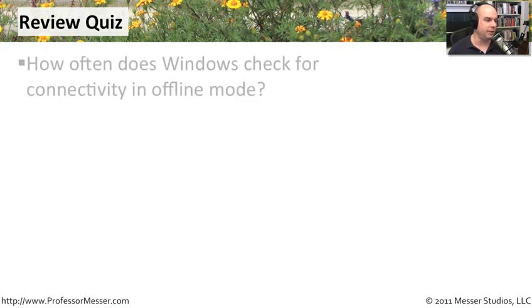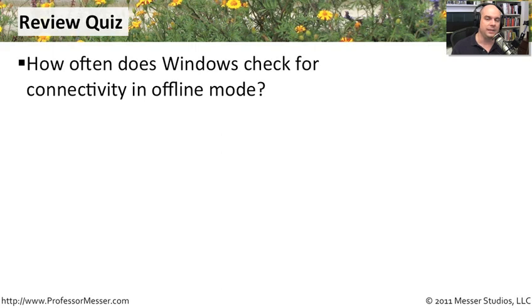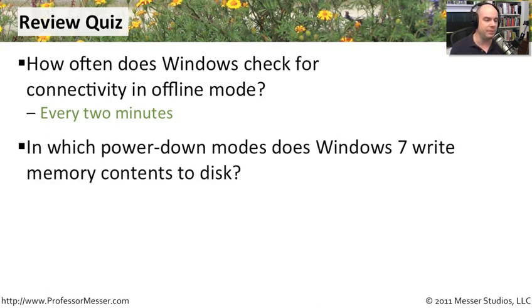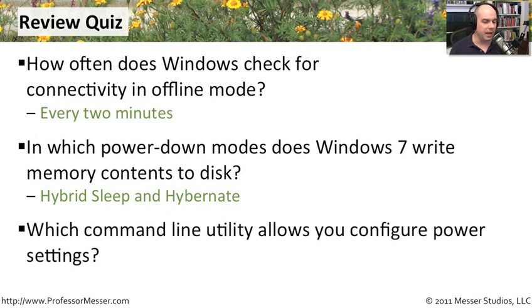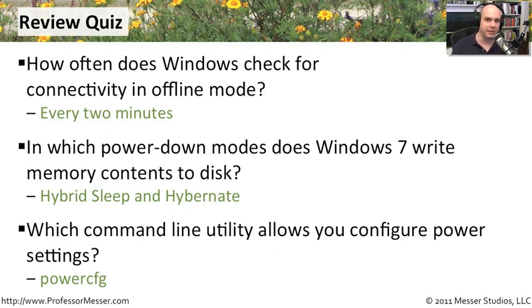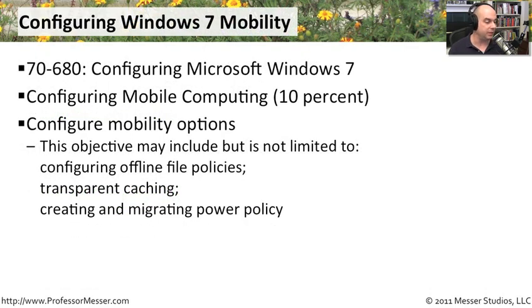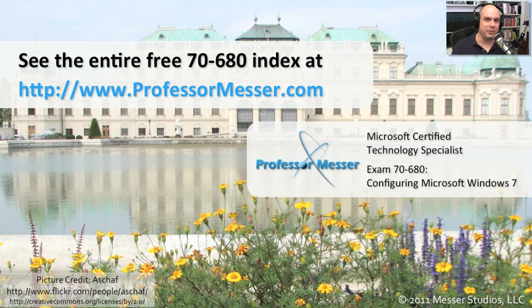Let's review the topics covered in this video. First: how often does Windows check for connectivity when in offline mode? The default is every two minutes. Second: in which power-down modes does Windows 7 write memory contents to disk? That would be hybrid sleep mode and hibernate mode. Third: which command line utility allows you to configure power settings? That's PowerCFG, which you run from the command line shell. That covers our requirements for this video on mobility options — configuring offline file policies, transparent caching, and power policies. For more free Microsoft videos or to send a message, visit ProfessorMesser.com.